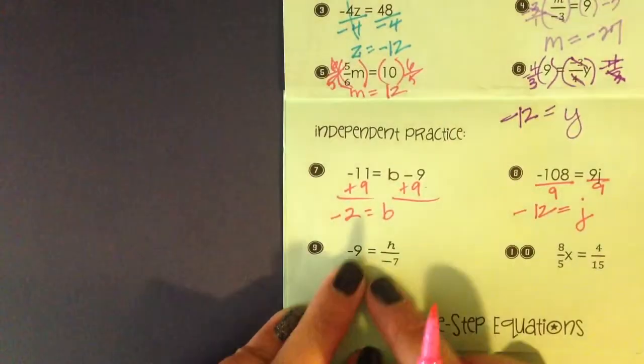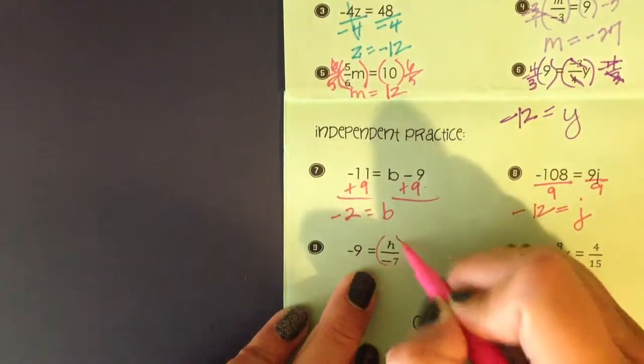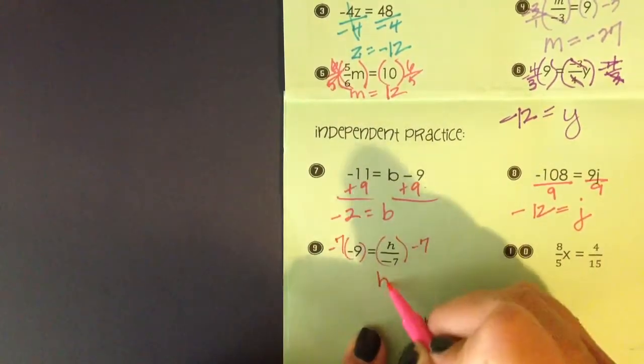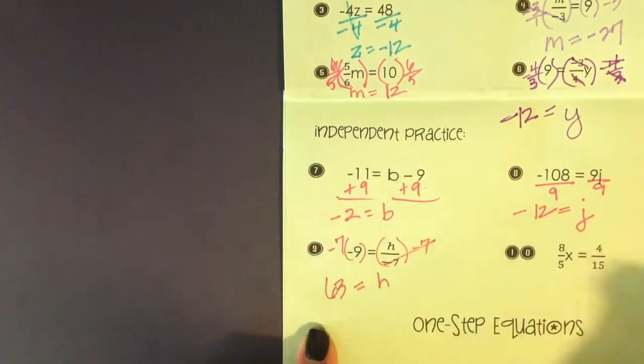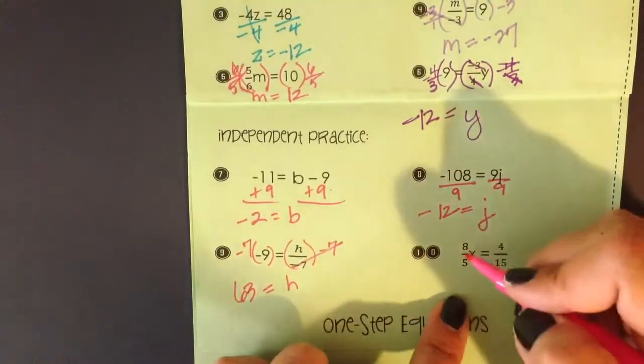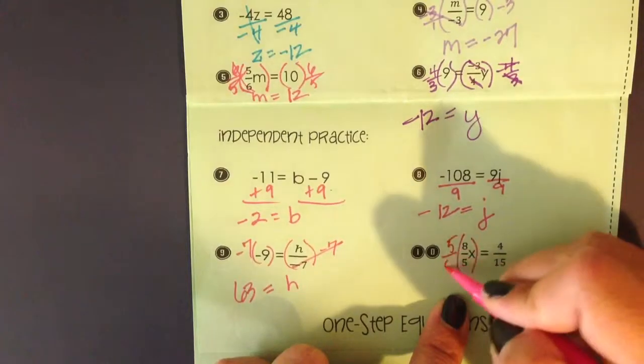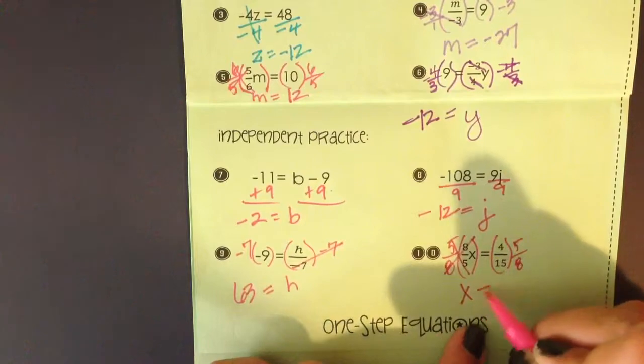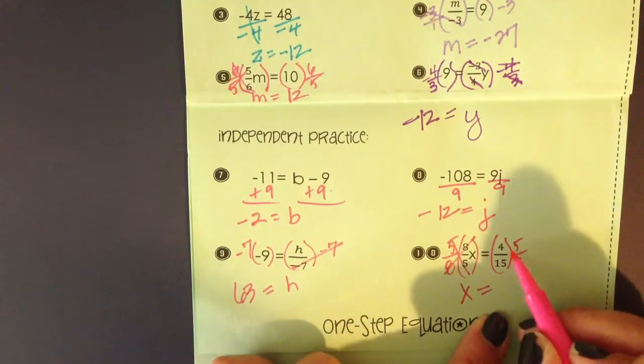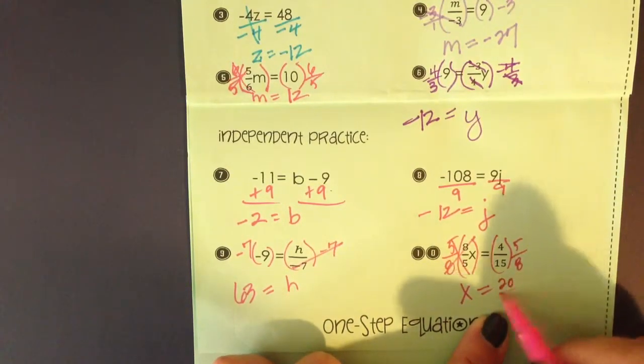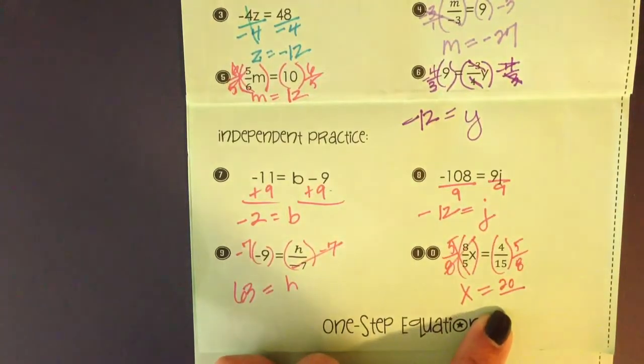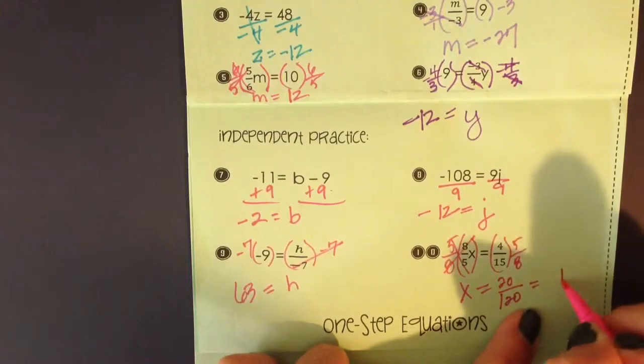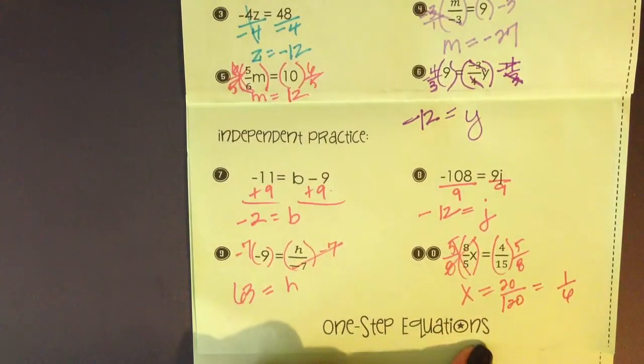I'm going to multiply in number 9. I'm going to multiply both sides by negative 7. H is equal to 63. In number 10, hopefully you multiplied both sides by 5 eighths, the reciprocal. The easiest thing to do with fractions is multiply them across the top. That's going to give me 20. Across the bottom, 15 times 8 gives me 120, and that actually will reduce to 1 sixth.